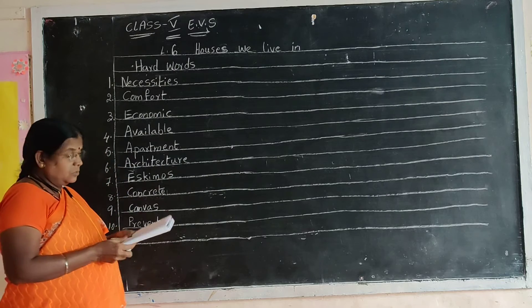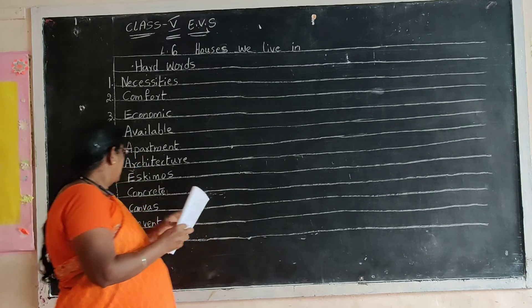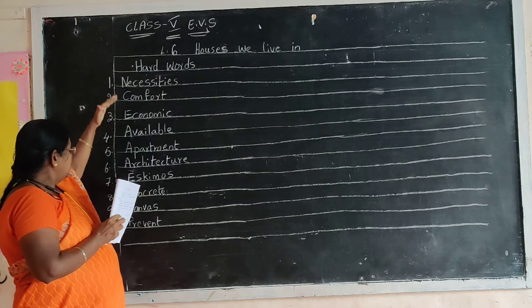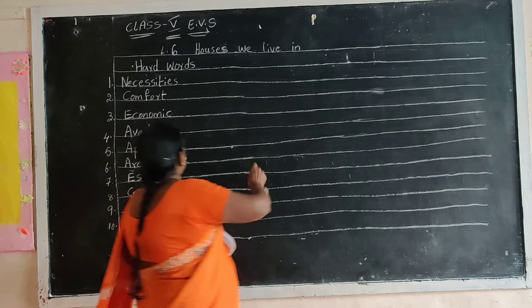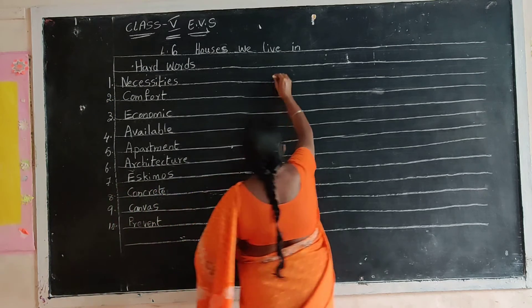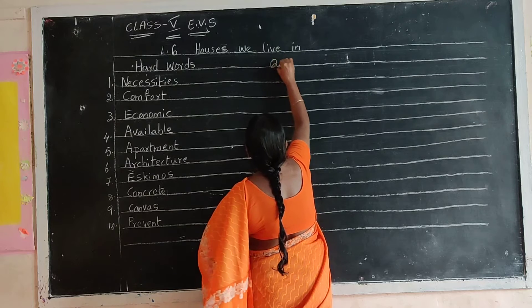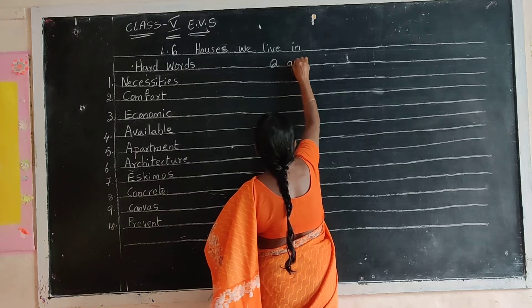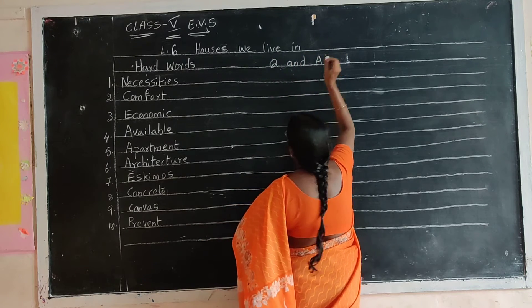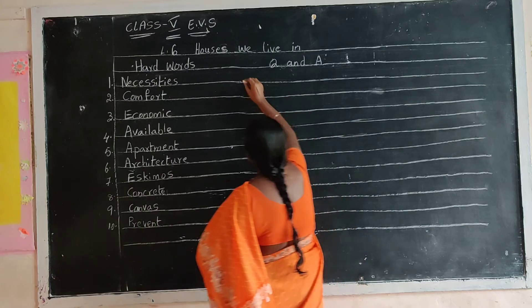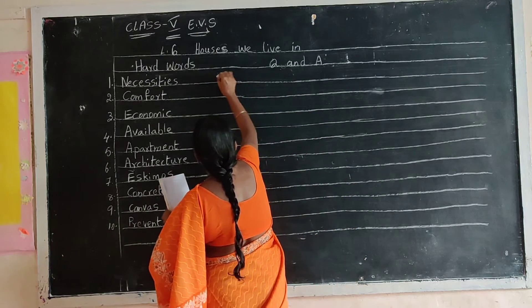Now, question and answers. After the hard words, put the heading: Question and Answers — Q and A. And tap again. Okay? First question.